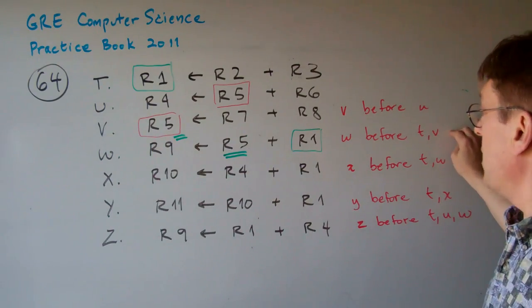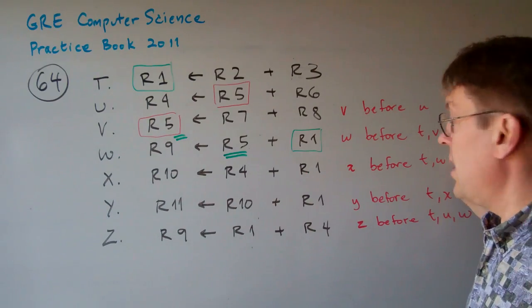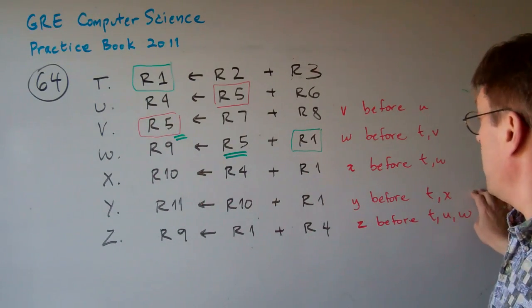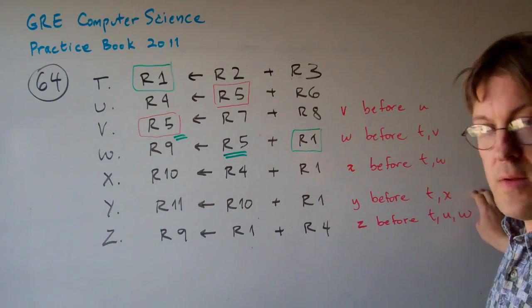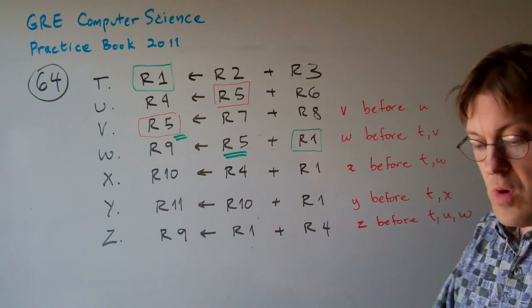W cannot come before T or V. X cannot come before T or W. Y cannot come before T or X. And Z cannot come before T, U or W.